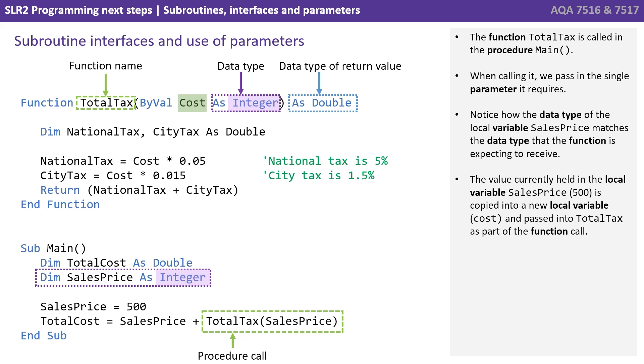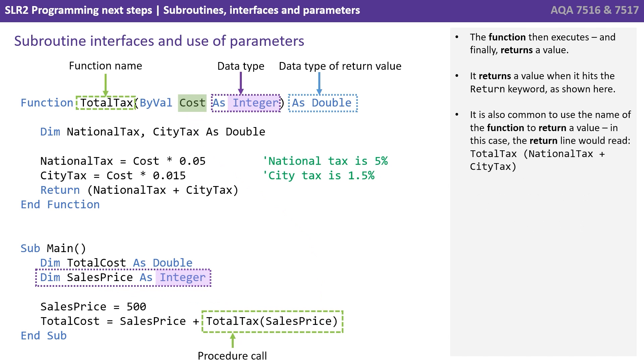The value currently held in the local variable sales price, that's 500, is copied into a new local variable cost and passed into total tax as part of the function call. The function then executes and finally returns a value. It returns a value when it hits the return keyword as shown here. It's also common to use the name of the function to return a value. In this case, the return line would read total tax open parenthesis, national tax plus city tax close parenthesis.